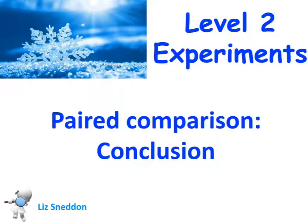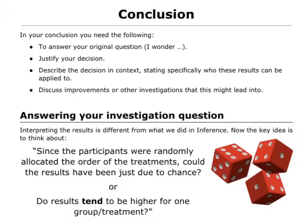Let's have a look at conclusions for our paired comparison experiments. We need to include these things in our conclusion: we need to first of all answer our original question, we need to be able to justify that decision we make, we need to be able to describe it in context, and we've got to be very specific about who those results apply to.